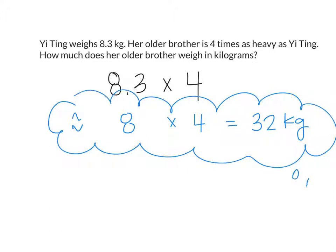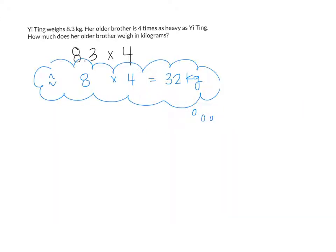One thing I like to do is to see your estimation on your papers by writing it like this. Once we have our estimation, we can find the exact answer. Eight point three, how can I write that without any decimal point? That's the same thing as eighty-three tenths. So I have to do eighty-three tenths times four.